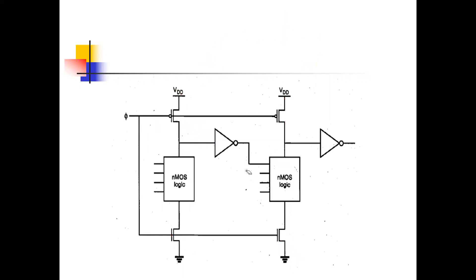When phi equals 0, the output node capacitance is 1 and the bottom NMOS is off. So whatever inputs you give — even if all inputs are 1 — the output will not go to 0, because this 1 can only become 0 when it gets a path to discharge. For that path, the lower transistor must be 1. That's why for phi equals 0, we always get output 1. The output node is pre-charged previously without any input — that's why phi equals 0 is called the pre-charge phase.